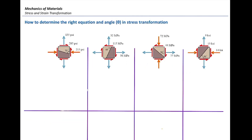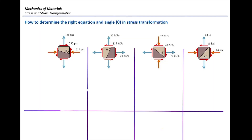Now let's practice a problem. I want us to identify what theta is and what sigma_n would be for solving these problems. Let's focus on the left element. Stress in the x direction is negative 215, stress in the y direction is positive 135. What about the shear stress — positive or negative? Positive on the right surface, it goes upward, so that would be positive 285.